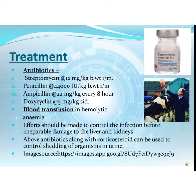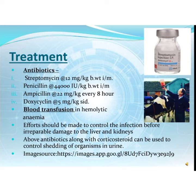Now coming to the treatment. In general, treatment includes antibiotics such as streptomycin at 12 mg per kg body weight IM daily, penicillin at 44,000 IU per kg body weight IM daily, ampicillin at 22 mg per kg body weight every 8 hours, and doxycycline at 5 mg per kg body weight once daily. Blood transfusion can also be given in hemolytic anemia. Efforts should be made to control the infection before irreparable damage to the liver and kidneys occurs. The above antibiotics along with corticosteroids can be used to control the shedding of organisms in urine.